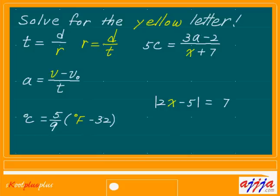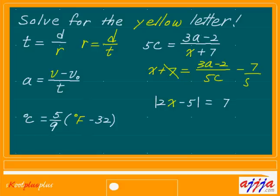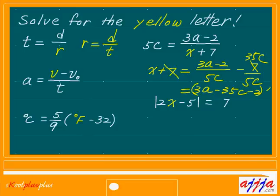Look at this one: 5c and x plus 7. I'm going to exchange — the left-hand side is going to be x plus 7, just like that. Right-hand side: 3a minus 2 over 5c. Then you scratch this one, minus 7. You can put this together if you want — simplifying, 5c right there and 5c right there, so 5 times 7 is 35c. Final answer: x equals 3a minus 35c minus 2 over 5c.